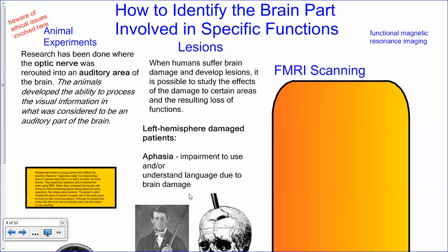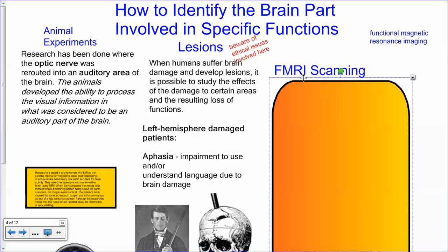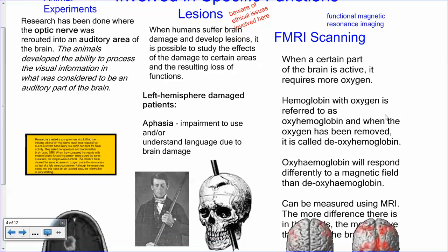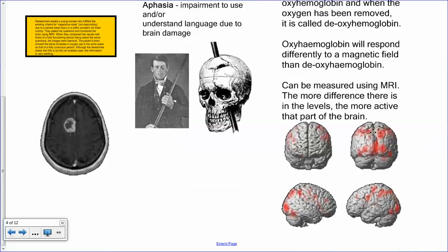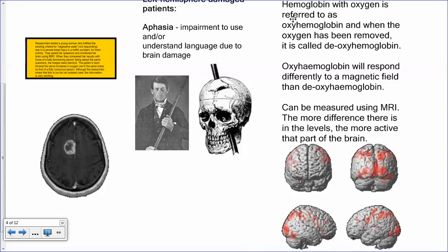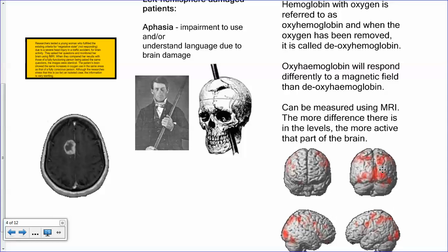One less controversial method is fMRI scanning — functional magnetic resonance imaging. Active parts of the brain require more oxygen, and we can visualize that using an MRI scan. When a certain part of the brain is active, it requires more oxygen. Hemoglobin with oxygen is called oxyhemoglobin, and without oxygen it's called deoxyhemoglobin. The difference in how these respond inside a magnetic field is what gets visualized.